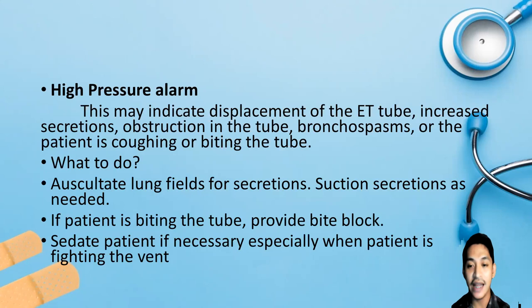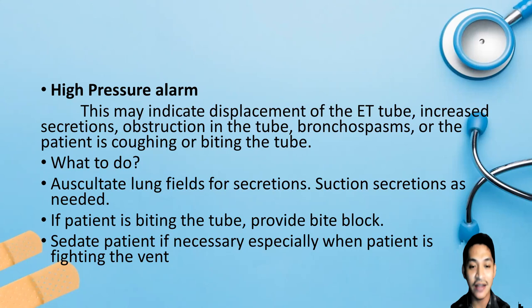A high pressure alarm may indicate displacement of the ET tube, increased secretions, obstruction in the tube, bronchospasm, or the patient coughing or biting the tube. Management: always assess the patient first, auscultate lung fields for secretions, suction as needed. If the patient is biting the tube, provide a bite block or insert an oral pharyngeal airway. Sedate the patient if necessary, especially when fighting the ventilator — ensure this is ordered by the attending physician. Monitor pulse oximetry continuously.